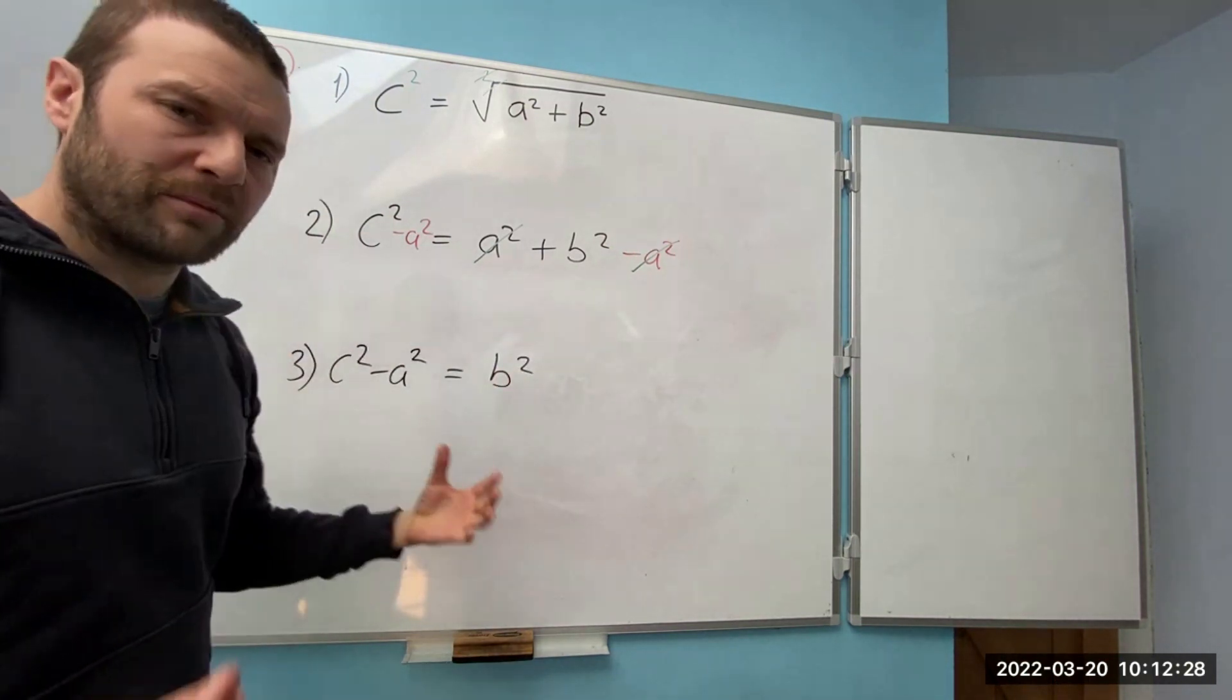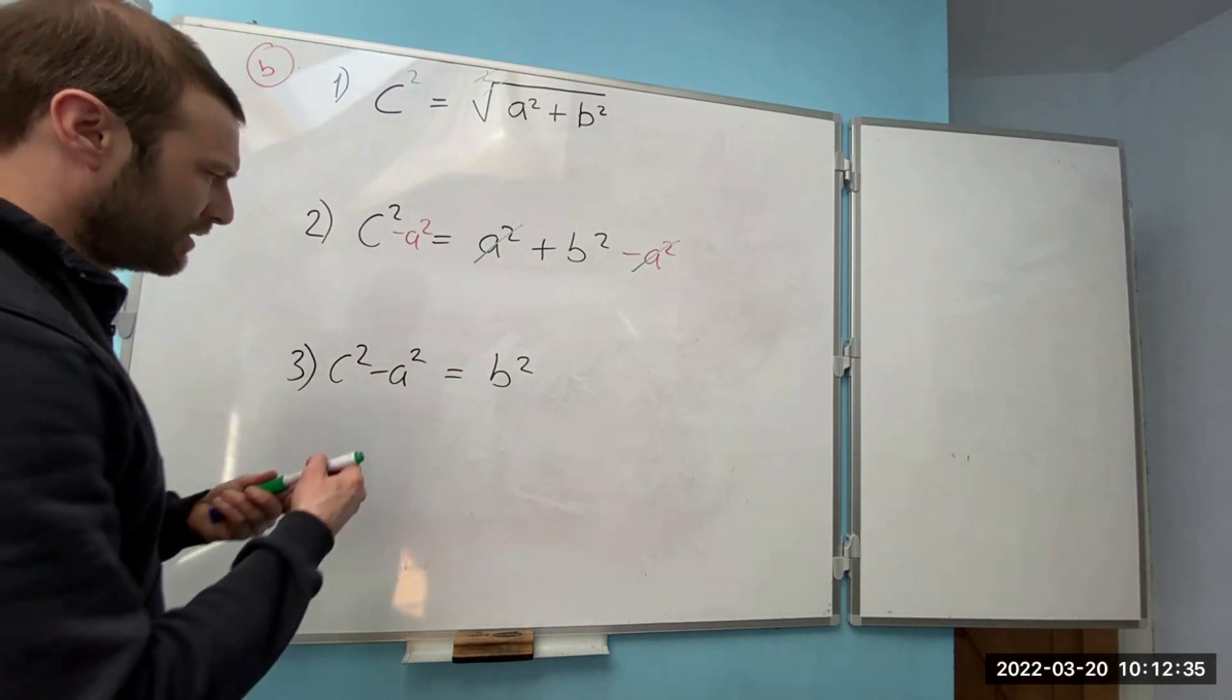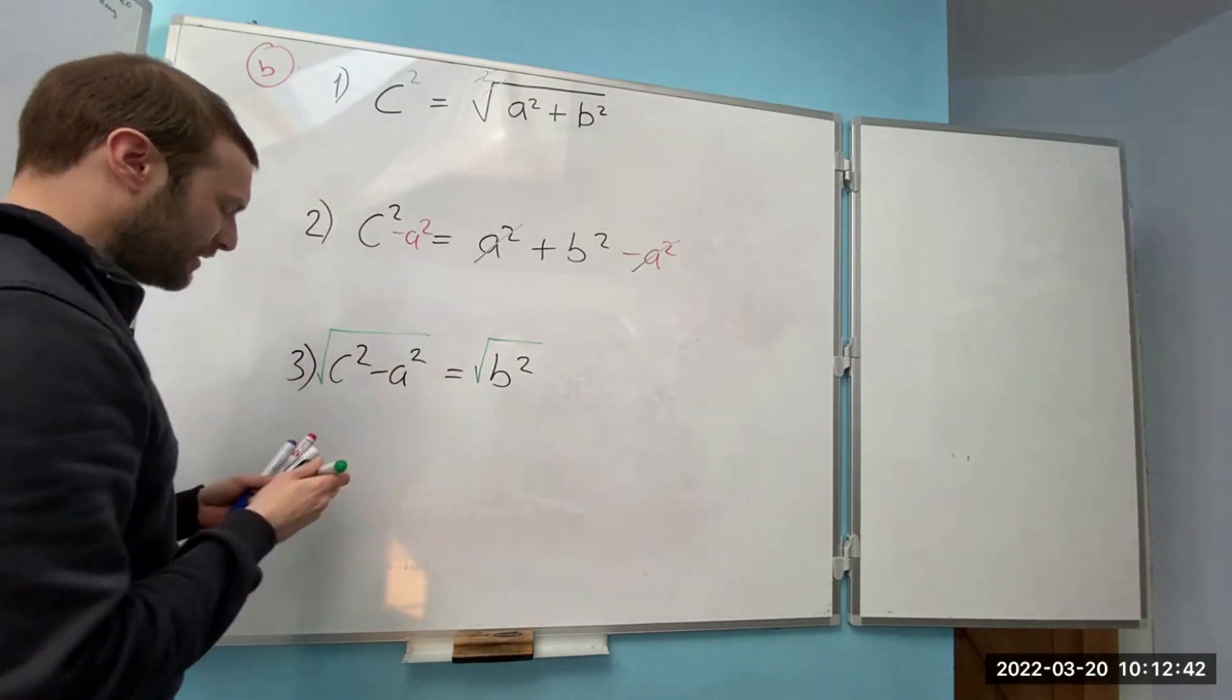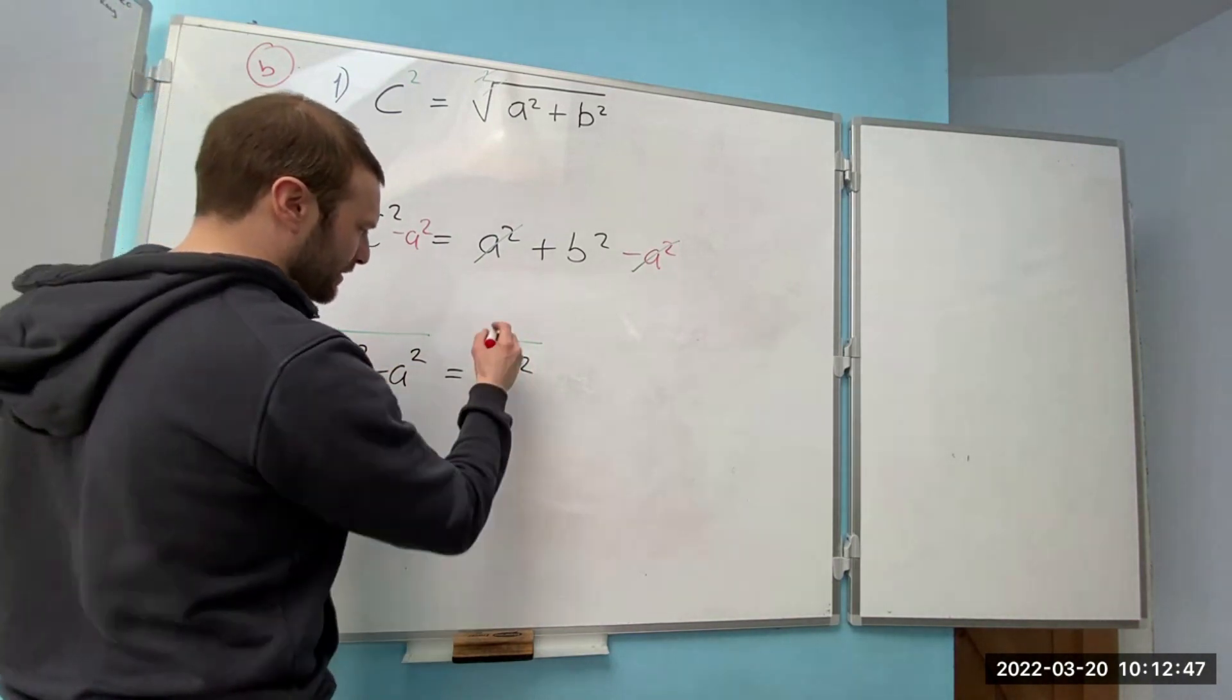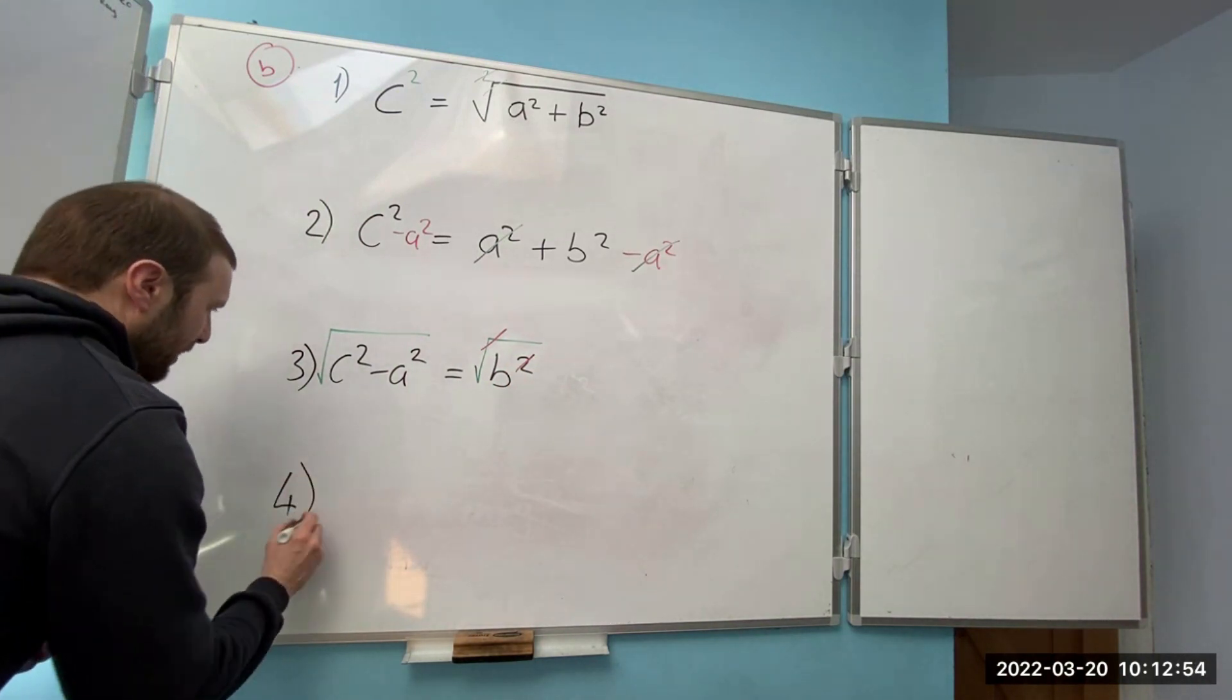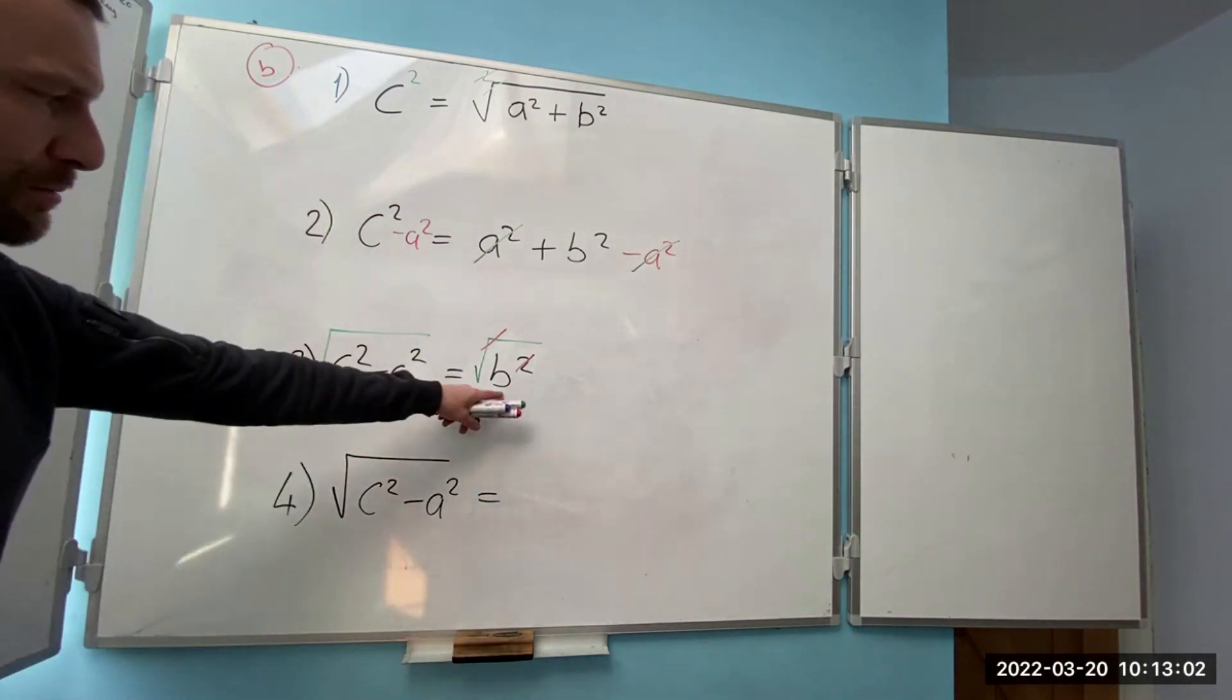To get rid of the square I'll have to square root. So if I square root the b, whatever I do this side I have to do this side. They cancel each other out so that and that cancels each other out. And so I'm left with step four I've got the square root of c squared minus a squared equals b.